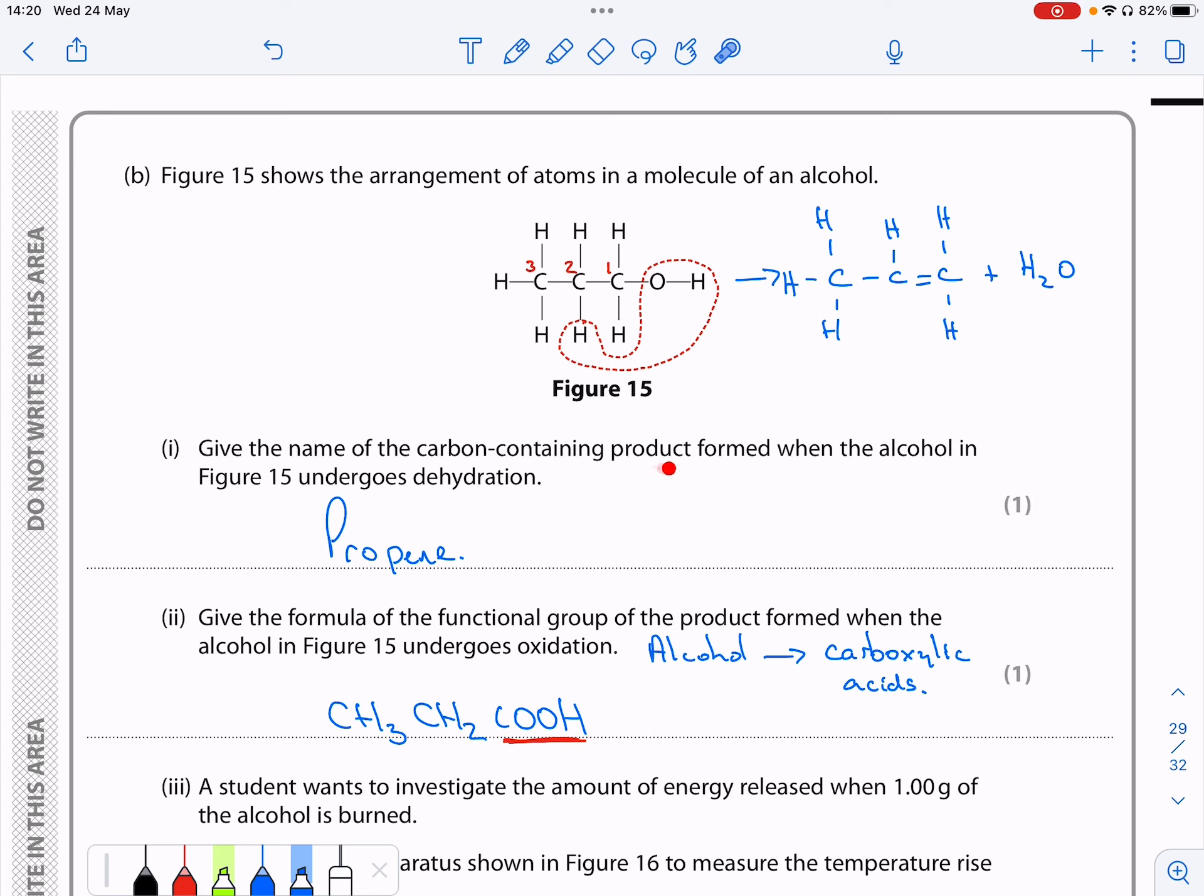Give the name of the carbon-containing product formed when an alcohol undergoes dehydration. Remember, dehydration – what does that mean? That is the removal of water. So if we take water, as we're doing here, away from this...